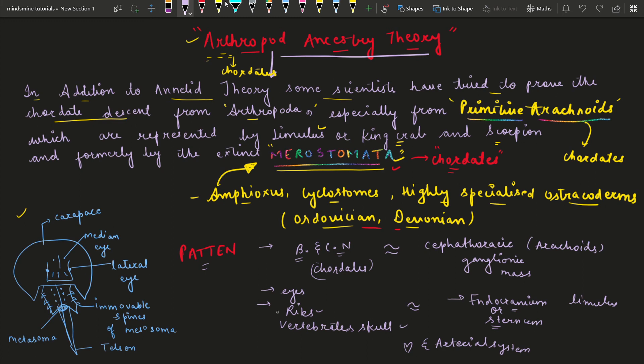The Heart and Arterial System was also the same. Patten also noted that the jaws in Ostracoderms are similar to those in Arthropods. So in these two groups there are some dissimilarities as well, and due to those dissimilarities, the Arthropod Ancestry has been discarded.